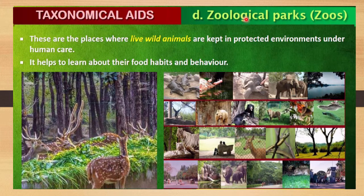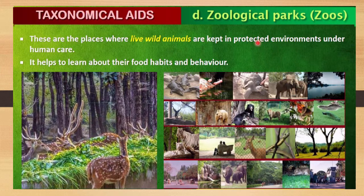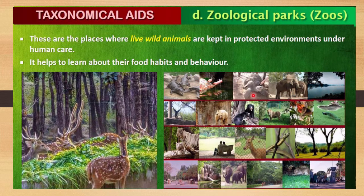Next are zoological parks — called zoos in short. These are places where live wild animals are kept in a protected environment under human care. You can observe the food habits and behavior of many different wild animals there, such as deer, alligators, birds, elephants, and more.